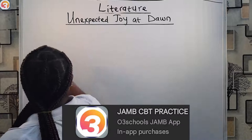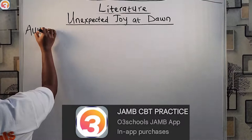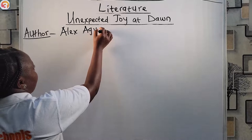This is a JAM recommended book and we're going to analyze it. First off, we'll look at the author. 'Unexpected Joy at Dawn,' published in 2003, was written by Alex Agi Agui.